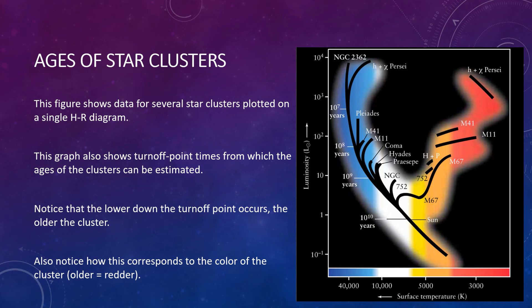This figure shows data for several star clusters plotted on a single HR diagram, also showing turn-off point times from which the ages of the clusters can be estimated. Notice that the lower down the turn-off point occurs — corresponding to lower masses moving off the main sequence — the older the cluster. Also notice how this corresponds to the color of the cluster, where older means redder in general. As you move from top to bottom, you'll notice that the age is getting much higher, because least massive stars have longer lifetimes. Wherever you see these turn-off points, you can estimate the age quite accurately for that star cluster.